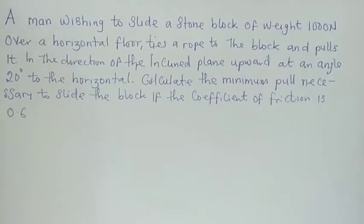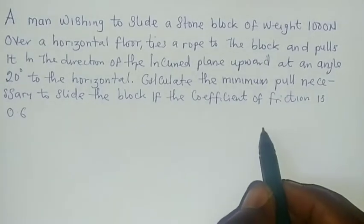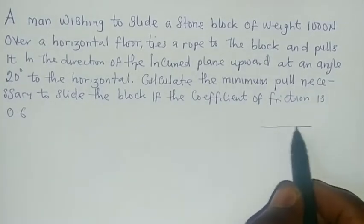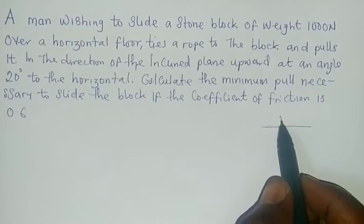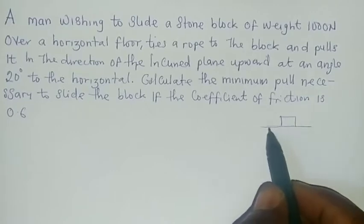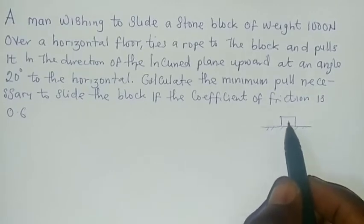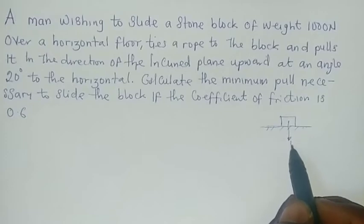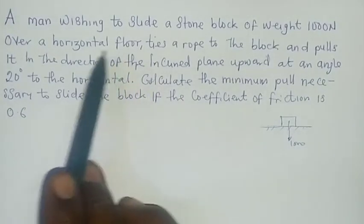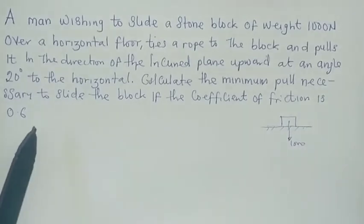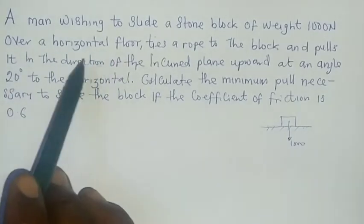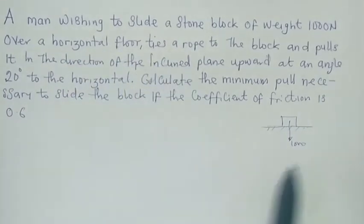A man, let's assume this is our stone block here on the horizontal inclined plane and the weight of it is 1000. The man is wishing to slide the stone block over horizontal floor, and he now ties the rope to the block.